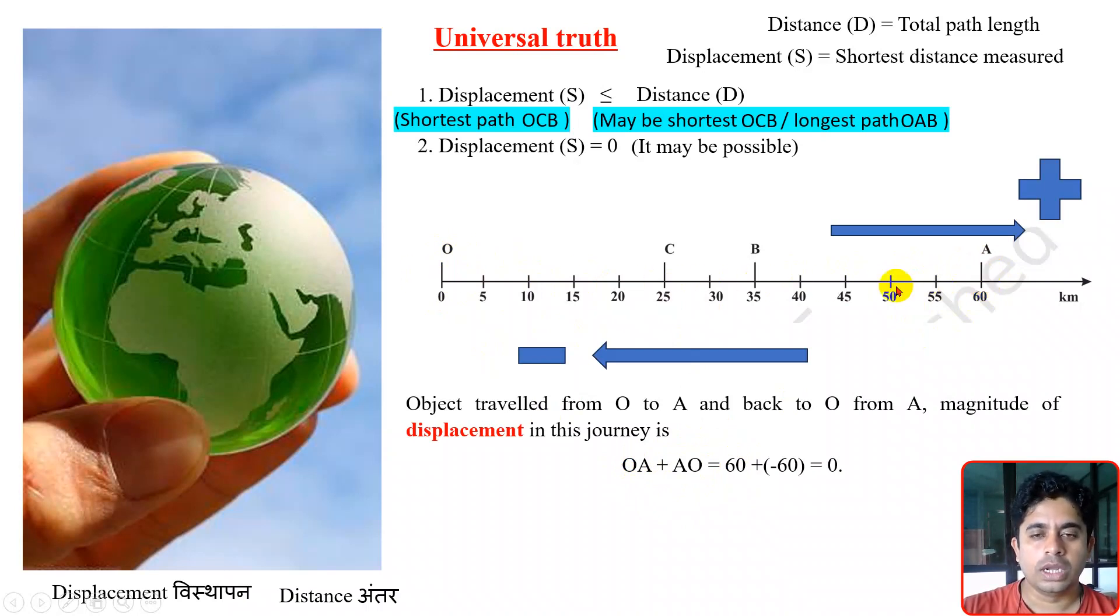this journey A to O is towards the left hand side. So I need to give that distance a negative sign. So O to A is positive 60 and A to O is negative 60. If I add them, what answer will come? Displacement will be zero. So it is possible that displacement is zero.